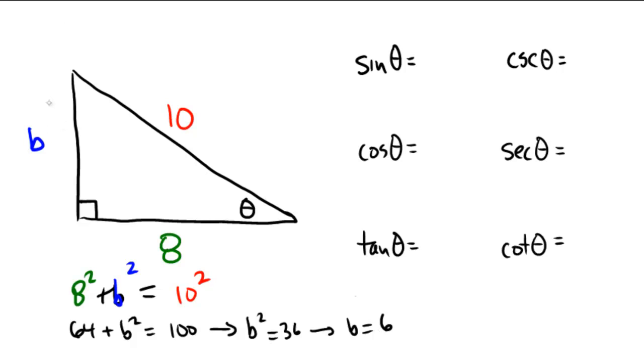So here we have the 6, 8, 10 triangle. Again, nice numbers. It's actually a 3, 4, 5 doubled in size. So assuming that you got that, that would have been the first step to ensure that you get the problem correct. And the next step is to just set up our ratios.